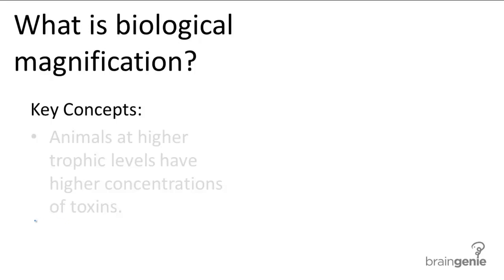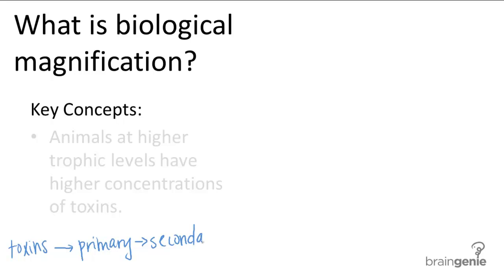Sometimes, organisms in lower trophic levels will consume toxins from their environment with their diet. These organisms usually only have a small concentration of the toxins, so it doesn't really affect their health, but organisms in higher trophic levels could be in trouble. If a primary consumer eats the toxins, and then the secondary consumer eats the primary consumer, the secondary consumer is eating the toxins as well. And because secondary consumers eat a lot of primary consumers, they end up having a higher concentration of toxins in their body than the primary consumer does.